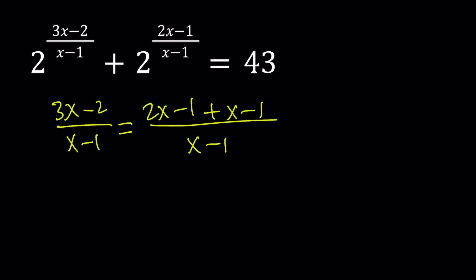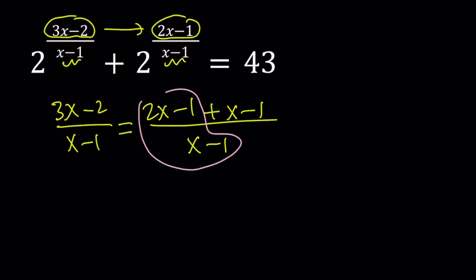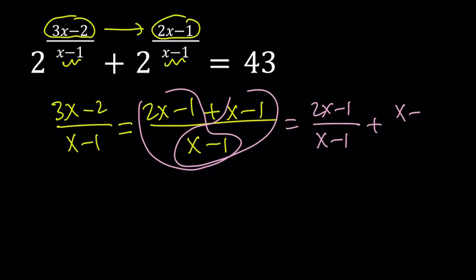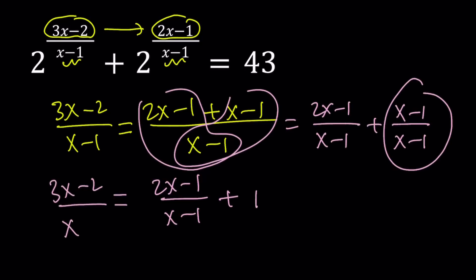Notice that 2x plus x is 3x, and negative 1 plus negative 1 is negative 2. Why did I break it down that way? Because we do have a 2x minus 1 here, and basically 3x minus 2 can be written as the sum of (2x minus 1) plus (x minus 1), which happens to be the common denominator. We can separate these into two fractions: (2x minus 1) over (x minus 1) plus (x minus 1) over (x minus 1). That second term is 1, so this becomes (2x minus 1) over (x minus 1) plus 1, which equals (3x minus 2) over (x minus 1).